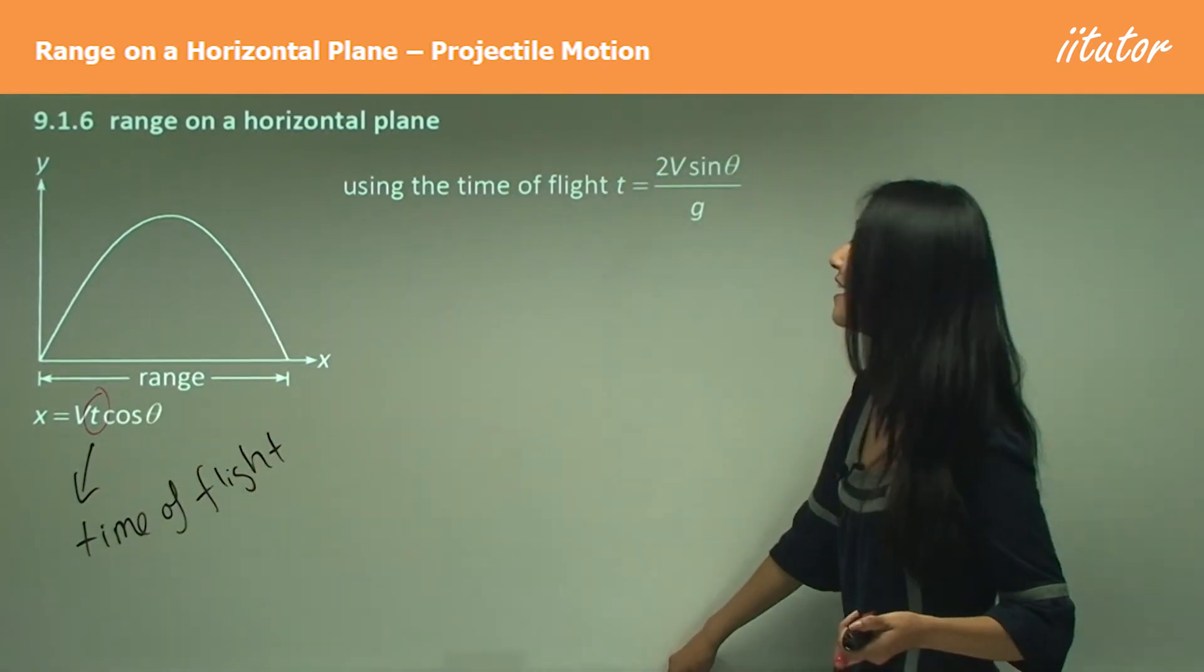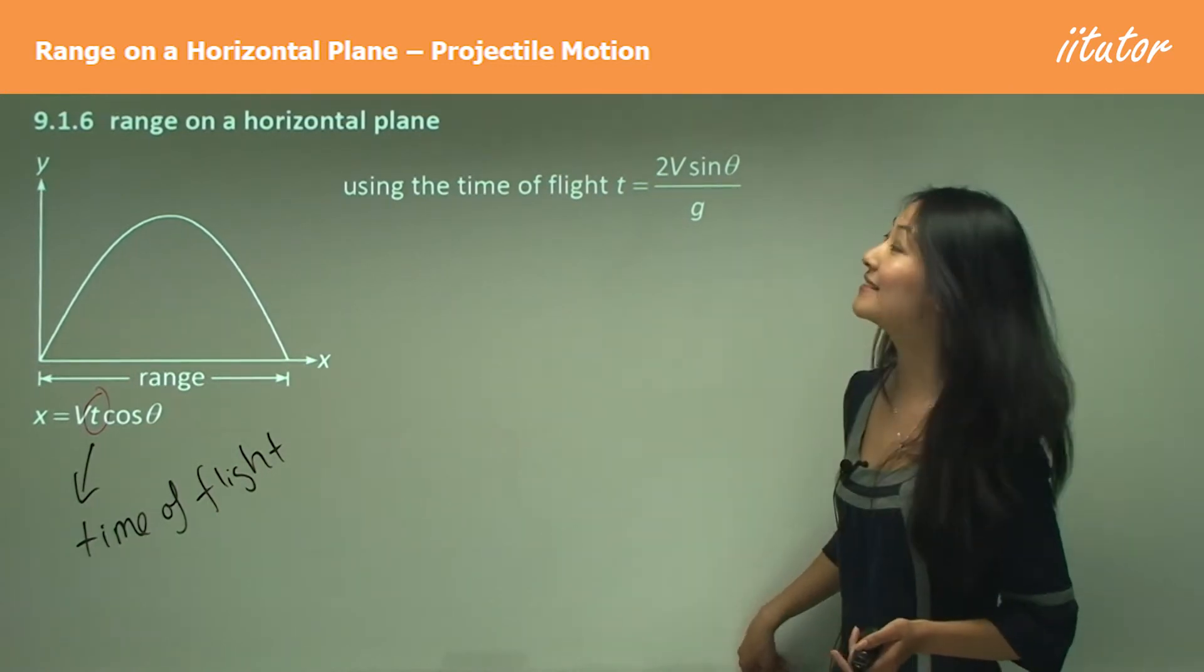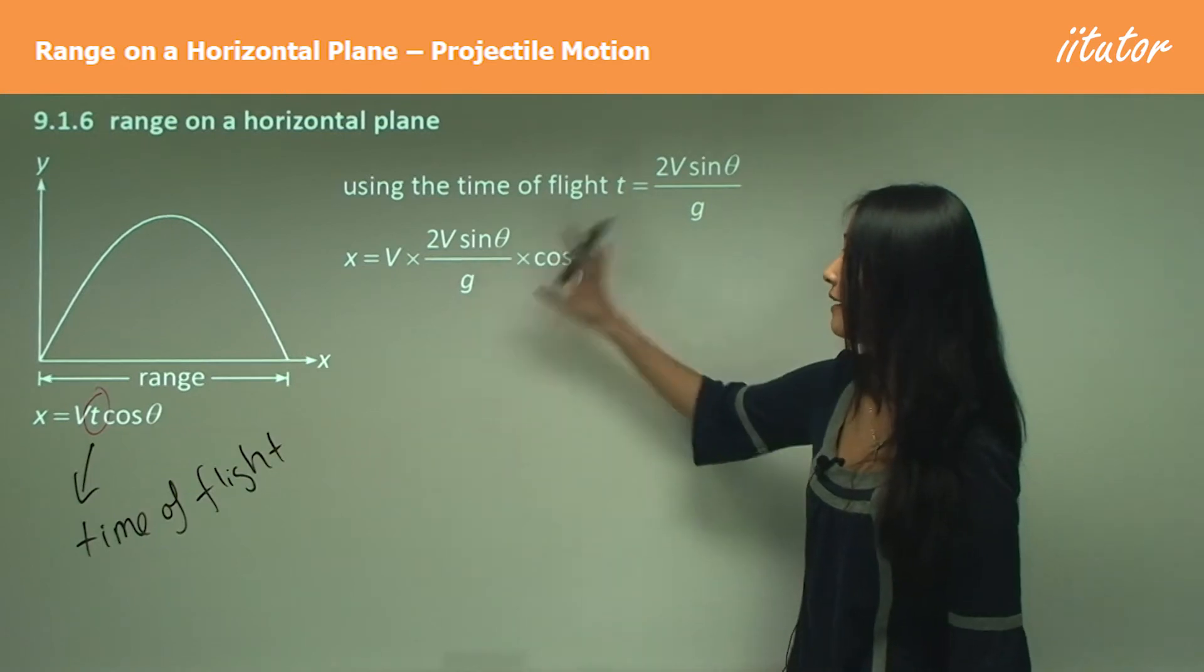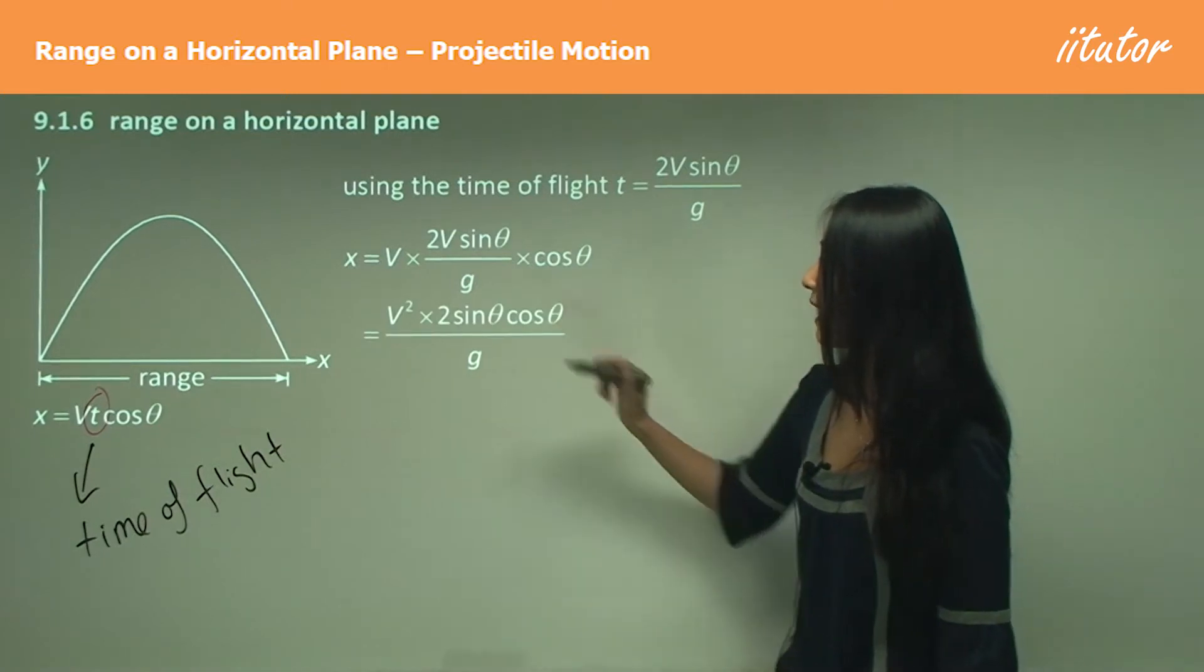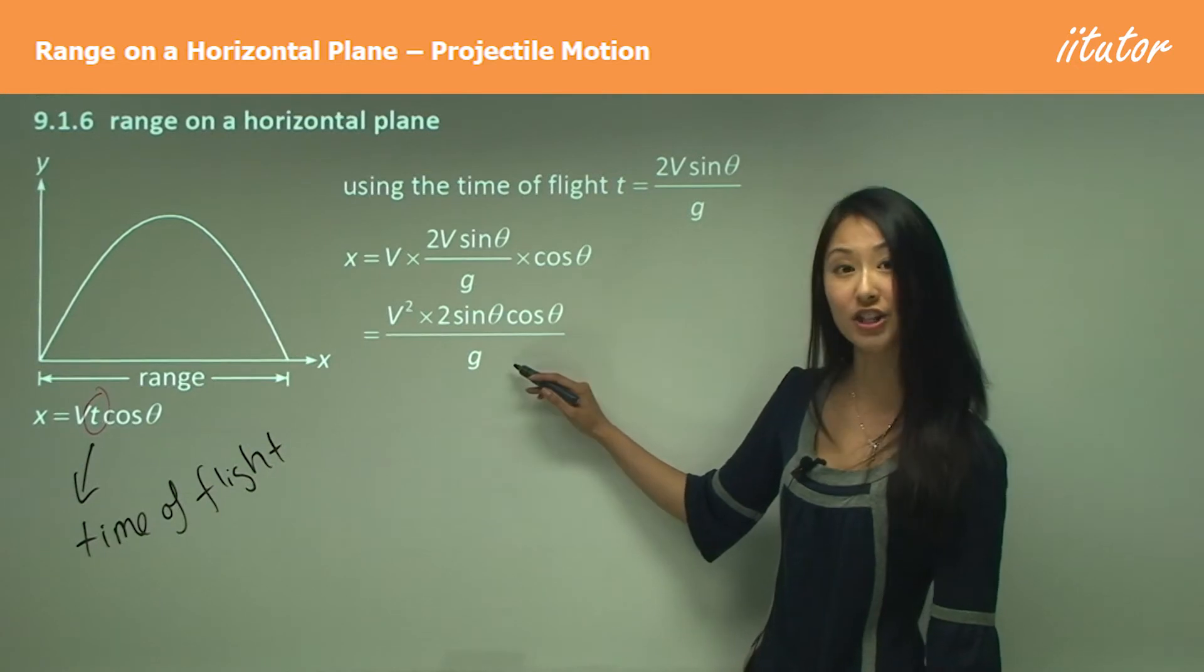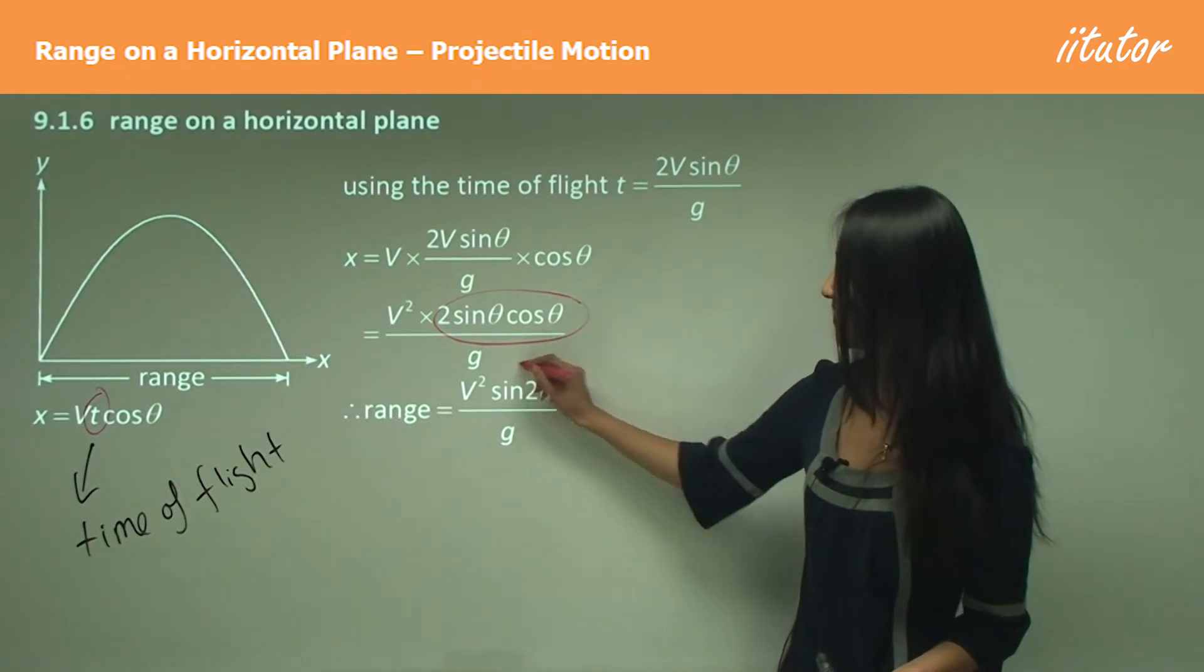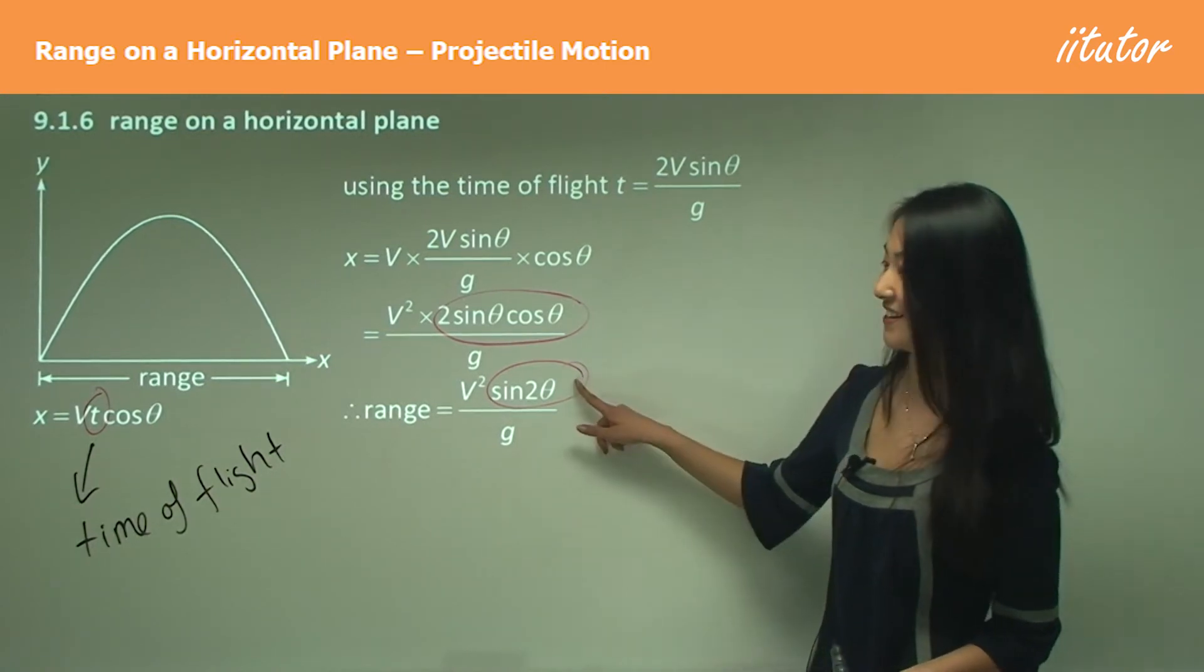Now the time of flight, remember from before, was 2V sin theta on g, so you don't have to memorize that. You would have worked that out in part A or part B. All you need to do, really simple, is where there's T, substitute in the time of flight. So in this case this just becomes V times V is V squared, 2 sin theta cos theta on g, and this 2 sin theta cos theta reminds you of the double angle for sin 2 theta. So that just becomes sin 2 theta, and that's why we get V squared sin 2 theta on g.